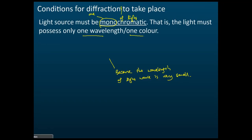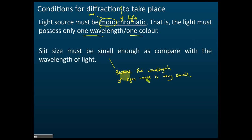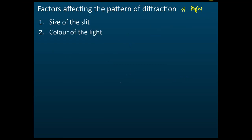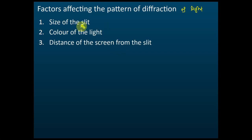Those are the two requirements for diffraction to occur. Now, factors affecting the patterns of diffraction of light — there are three factors: the size of the opening (size of the slit), the color of the light, and the distance of the screen from the slit.